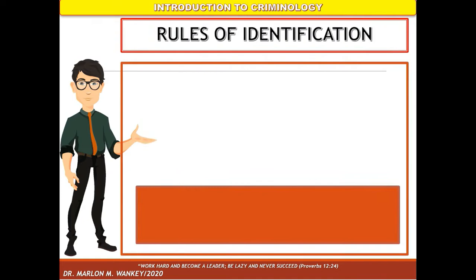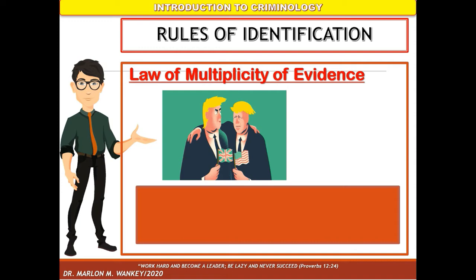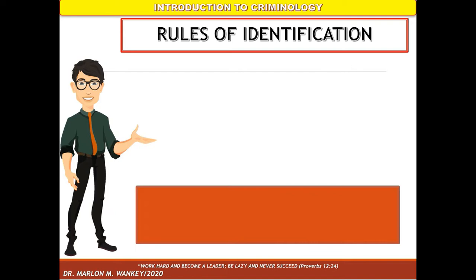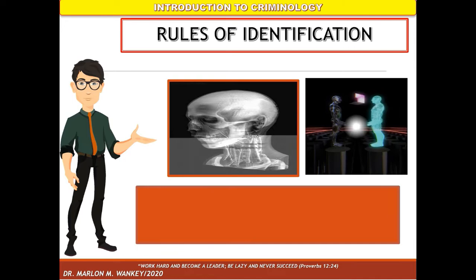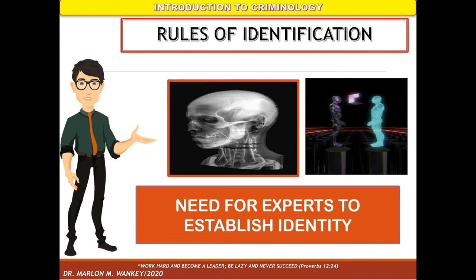The first thing we must know in the rules of identification is the law of multiplicity of evidence. The greater the points of similarities of two persons compared, the greater is the probability that the conclusion could be correct. The value of the different points of identification varies in the formulation of a conclusion. The longer the interval between the death and the examination of the human remains for purpose of identification, the greater is the need for experts to establish identity.